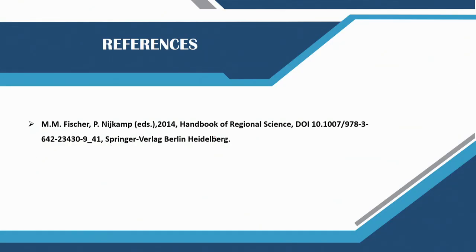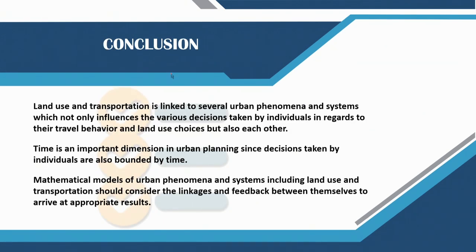The reference book you can follow is the Handbook of Regional Science, and other references will be added when covering different components of land use transportation interaction models. To conclude: land use and transportation are linked to several urban phenomena and systems, which not only influence the various decisions taken by individuals regarding travel behavior and land use choices, but also influence each other. Time is an important dimension in urban planning since decisions taken by individuals are bounded by time, and mathematical models of urban phenomena and systems — including land use and transportation — should consider the linkages and feedback between themselves to arrive at appropriate results.